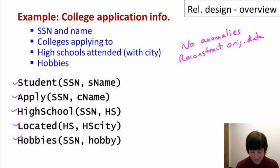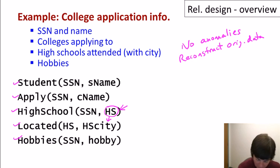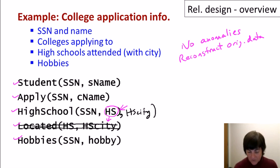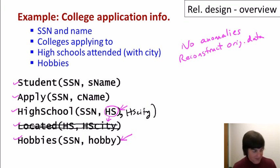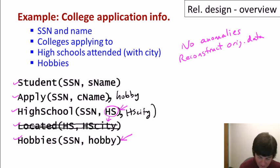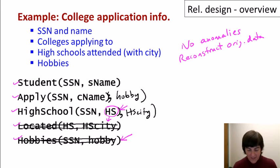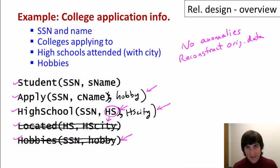A couple of modifications might occur. If the high school name alone is not a key, the preferred design would be to include the high school city together with the high school name in one relation — that doesn't introduce any anomalies. As another example, if a student doesn't want all their hobbies revealed to all colleges — say they don't want Stanford to know about their surfing — we can put the hobby together with where they're applying, so hobbies are specific to particular colleges. The best design depends not only on constructing relations well, but also on what the data represents in the real world.